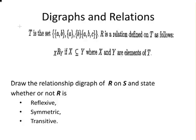R is a relation defined on T as follows: xRy if X ⊆ Y where X and Y are elements of T. Draw the relationship digraph of R on S and state whether or not R is reflexive, symmetric, or transitive.